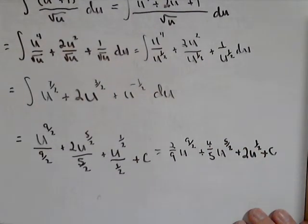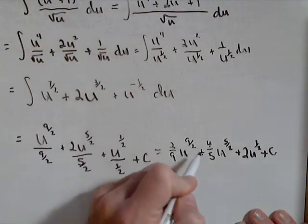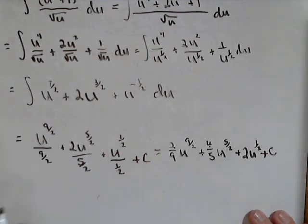Last step is to substitute back. Oh, sorry, no, we didn't substitute. So there's our final answer, all in terms of u, and we're done with that one.